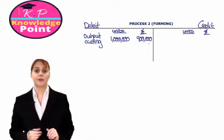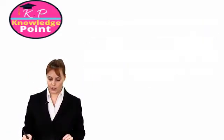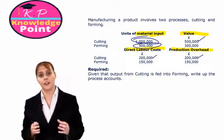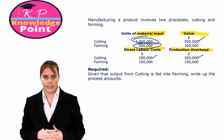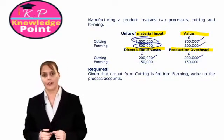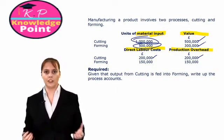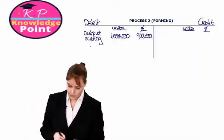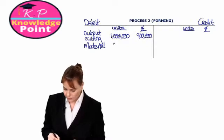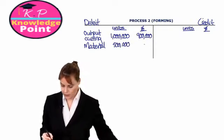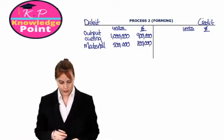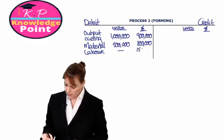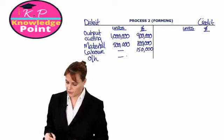We record our first input as the output from cutting: one million units with a value of 900,000. Looking back at the question, in the forming process we have added an additional 500,000 units of material with a value of 300,000. We then add the labour cost of 150,000 and the overhead costs for the forming process. Labour and overheads again have no unit value attached to them.